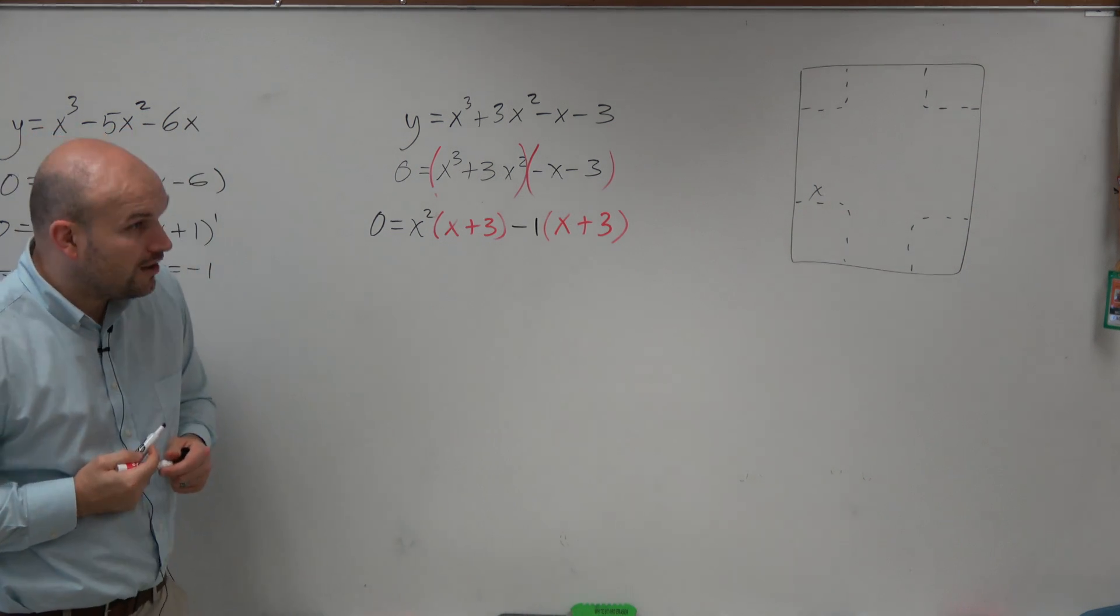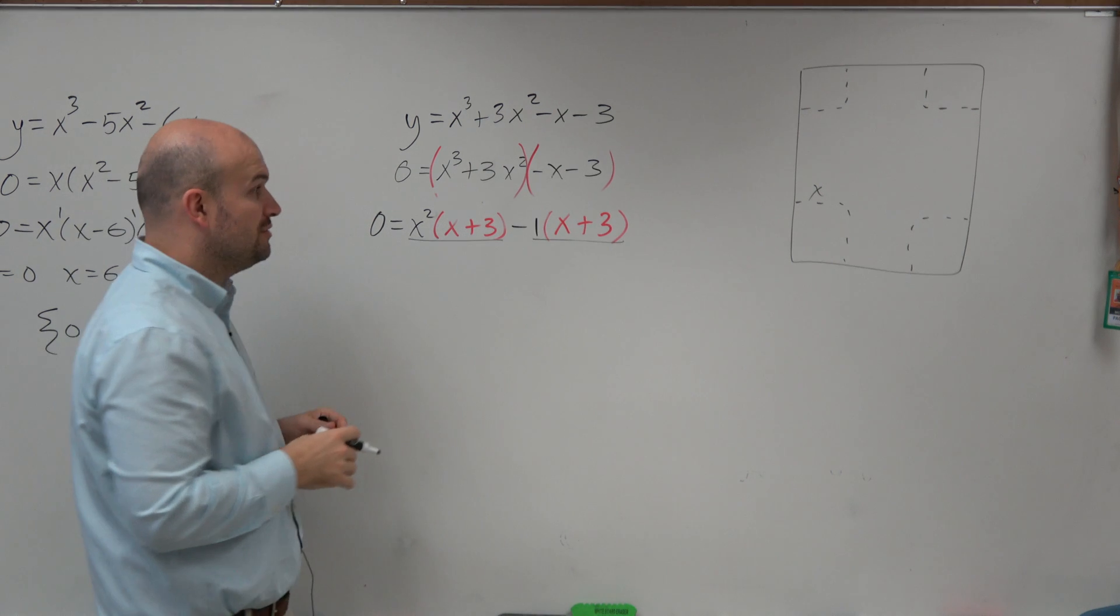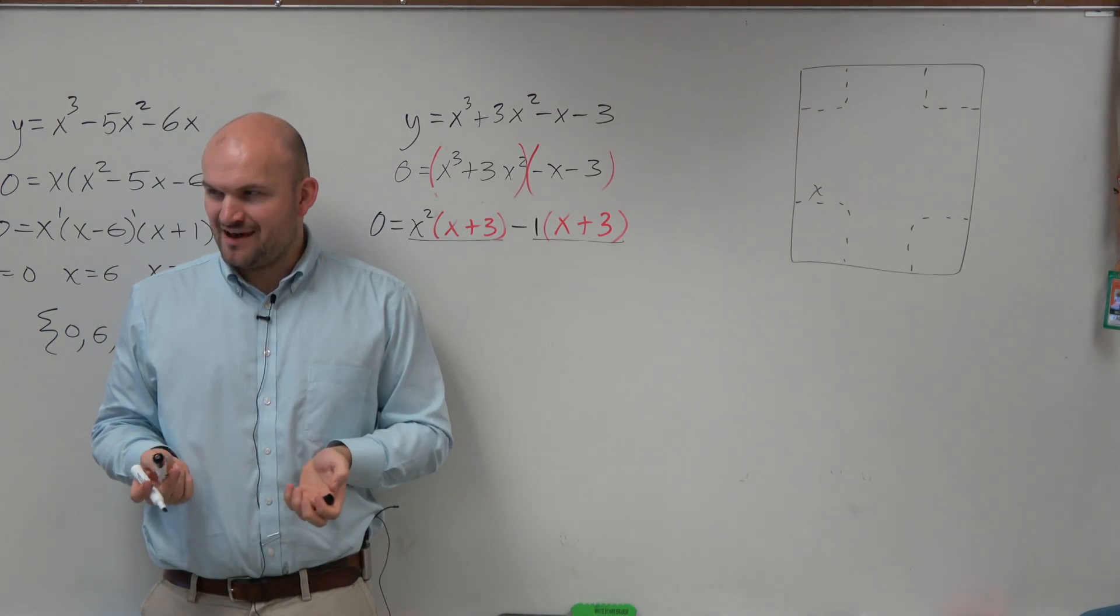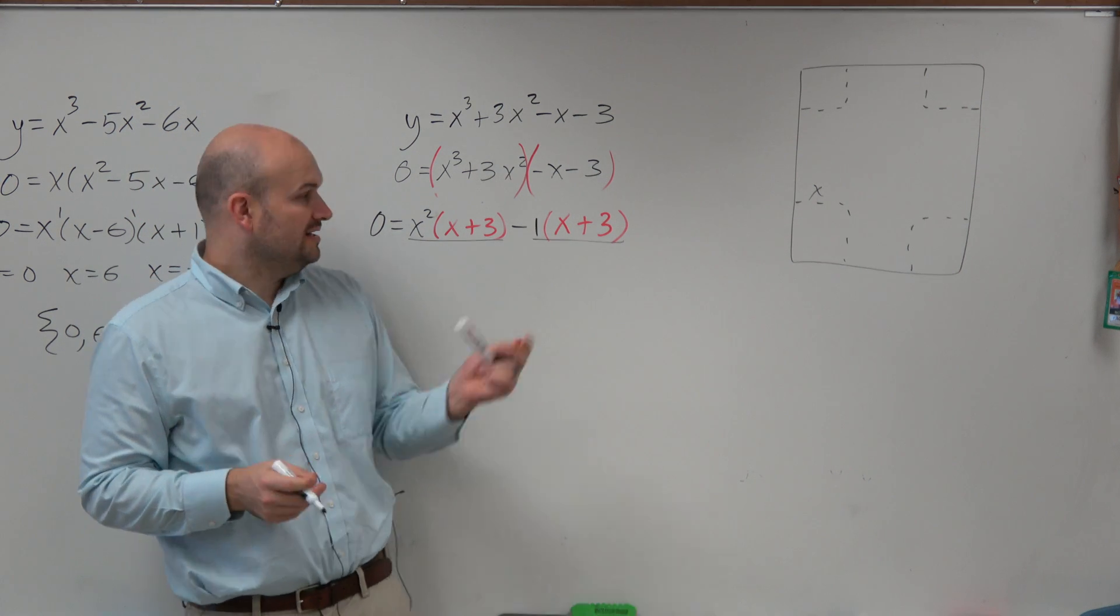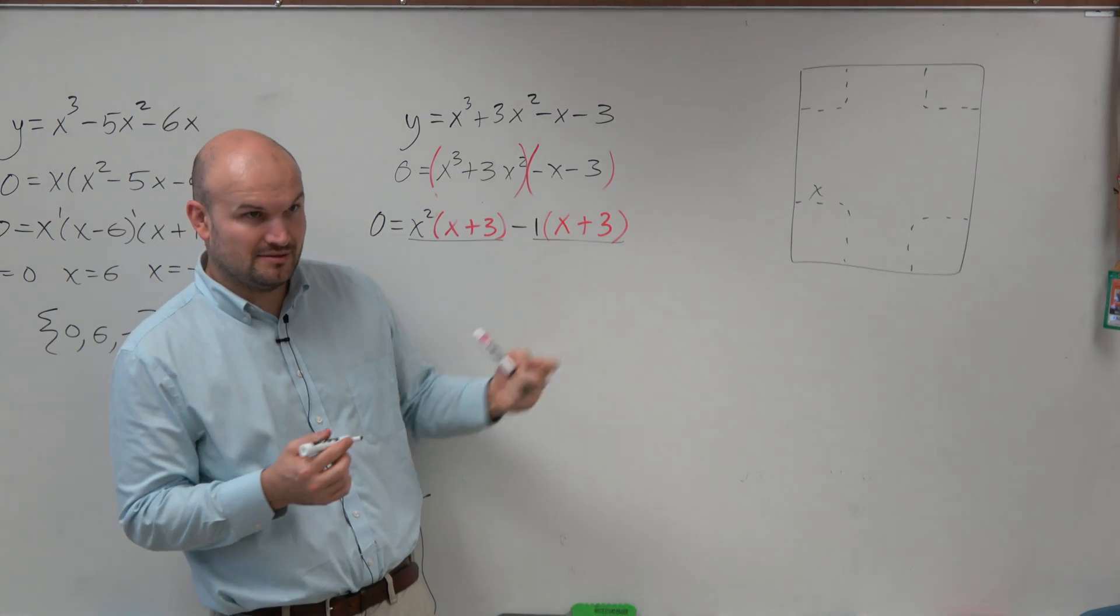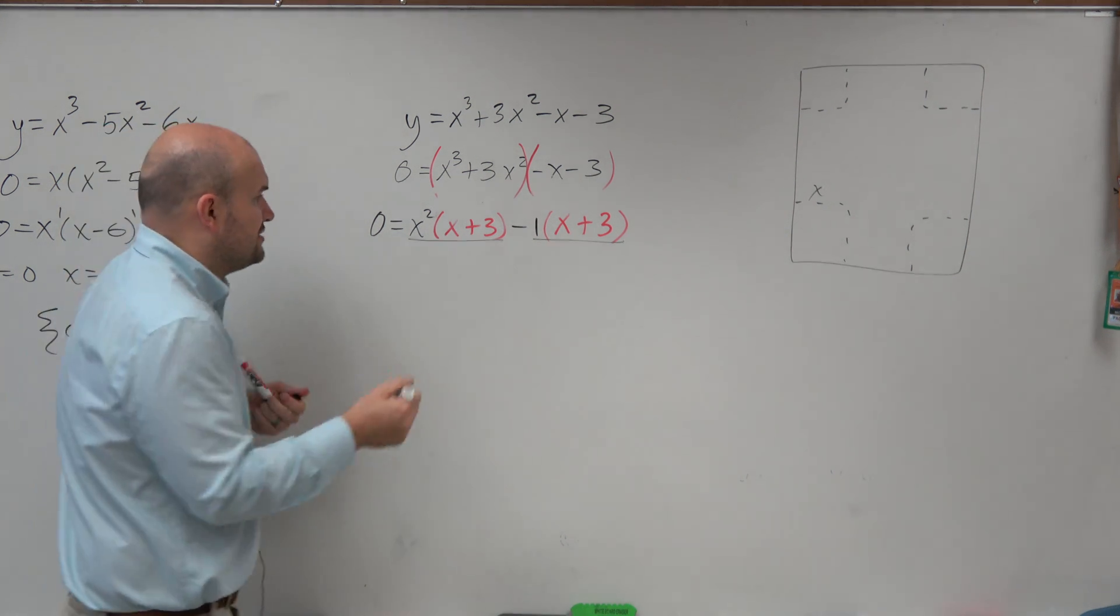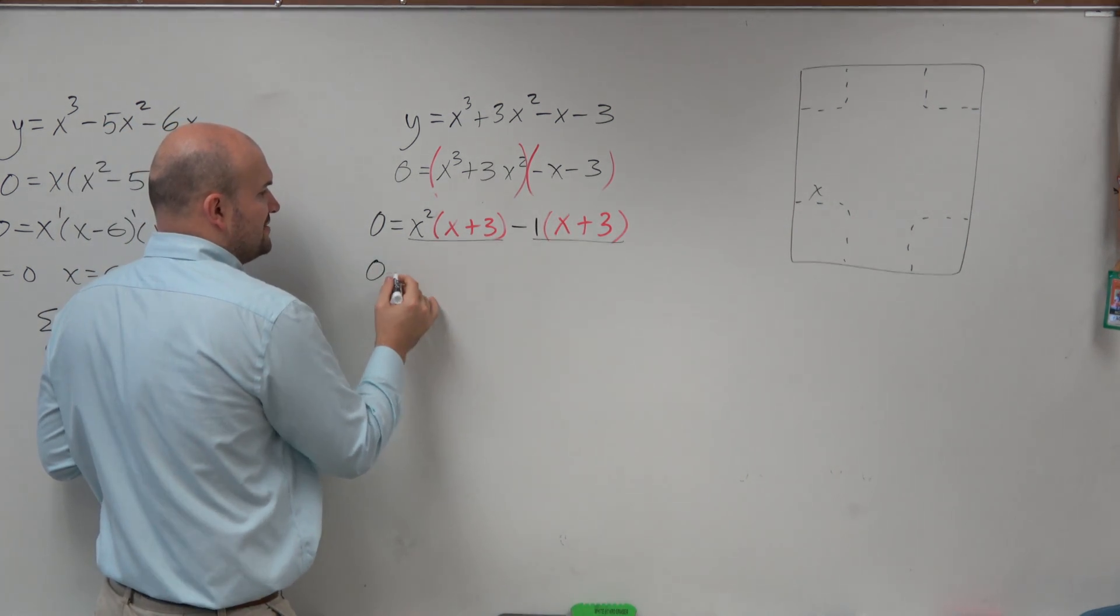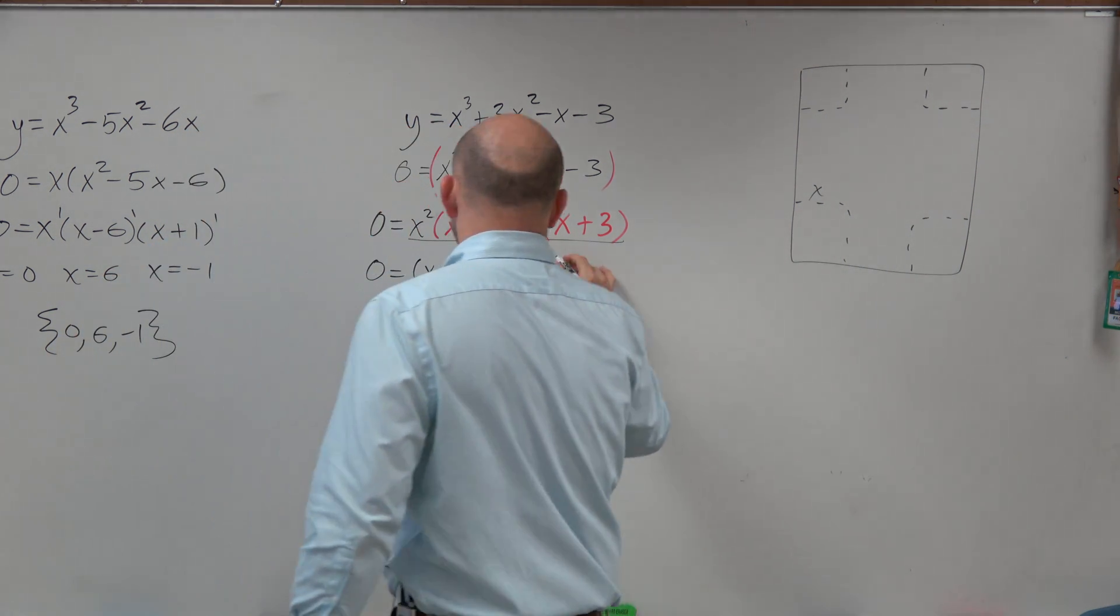Okay, now we have two expressions, and we want to see what they have in common. I used color code to make it very obvious, because you can see that these two expressions have what in common? X plus 3. It's an expression. It's not a term anymore. It's an actual expression. But now we can factor that out, and we're left with an x squared minus 1.